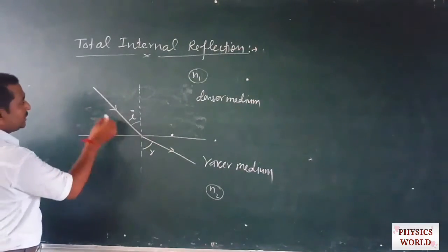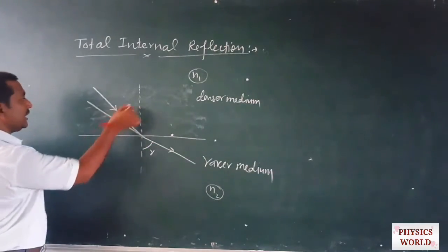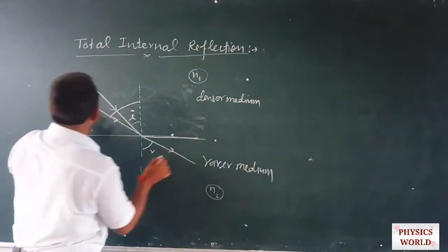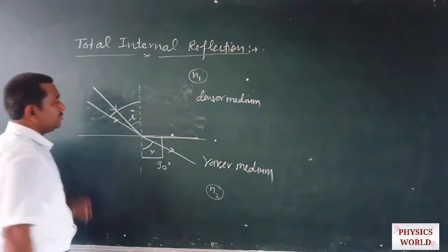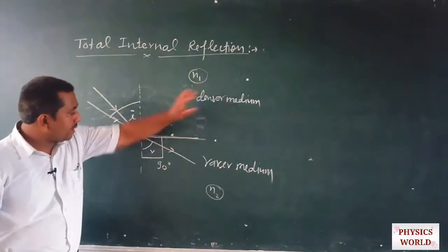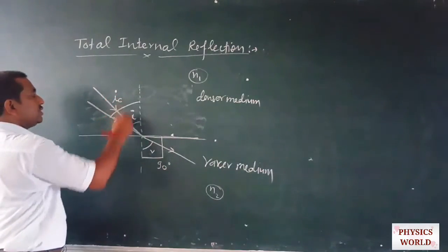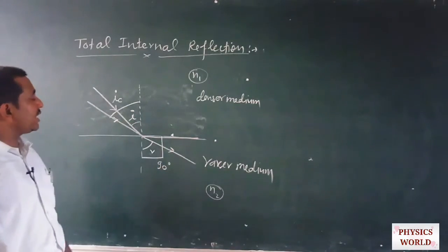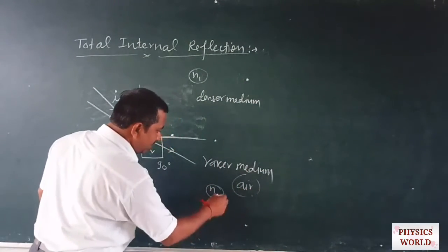So when light goes from a denser medium to a rarer medium, it must deviate away from the normal. If we increase the angle of incidence continuously, for one particular angle of incidence the angle of refraction becomes exactly equal to 90 degrees. This angle of incidence in the denser medium for which the angle of refraction in the rarer medium becomes 90 degrees is known as the critical angle for that denser medium with respect to the rarer medium.